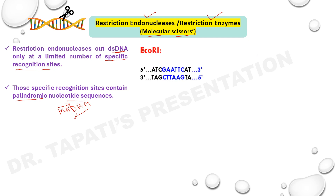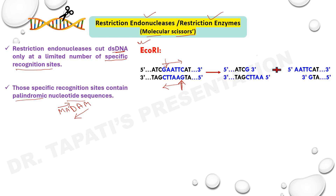One example of a restriction endonuclease is EcoRI. This enzyme recognizes the GAATTC sequence — this is the specific recognition site for EcoRI. It cuts the DNA between the bases G and A, so the cutting position is between G and A in the sequence GAATTC on both strands. Due to the action of this enzyme, the resulting fragments have sticky ends — overhanging positions at the 5' ends of the two fragments.